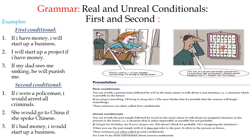Second conditional, example number one: 'If I were a policeman, I would arrest all criminals.' The form is: if + simple past — where 'were' is the verb 'to be' in the past — plus would or could + verb in the infinitive. Another example: 'She would go to China if she spoke Chinese.' Here I started with the result: would + verb in the infinitive, then simple past in the condition.